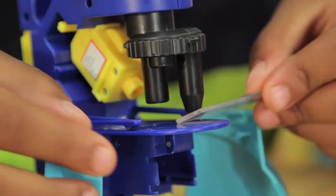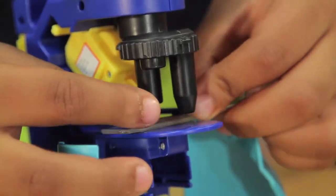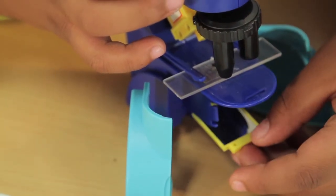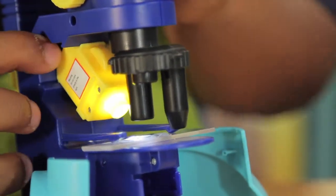Mount the slide by inserting it into the stage. Adjust the reflecting mirror for best lighting of the object. If it seems too dark, turn on the light.